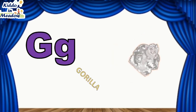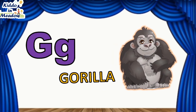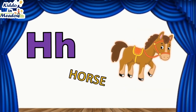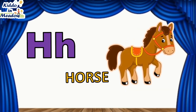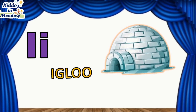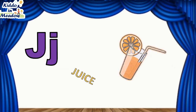G is for Gorilla. H is for Horse. I is for Igloo. J is for Juice.